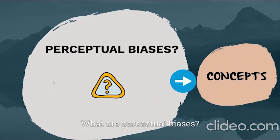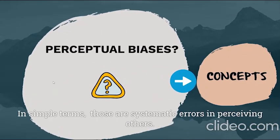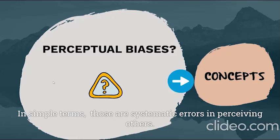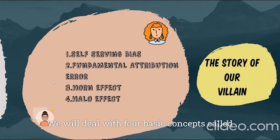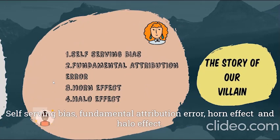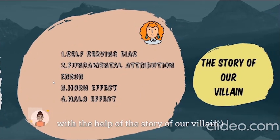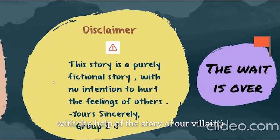What are perceptual biases? In simple terms, those are systematic errors in perceiving others. We will deal with 4 basic concepts called self-serving bias, fundamental attribution error, horn effect, and halo effect, with the help of the story of a villain.